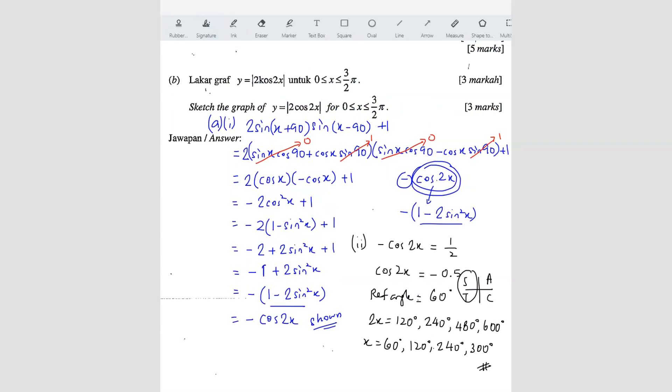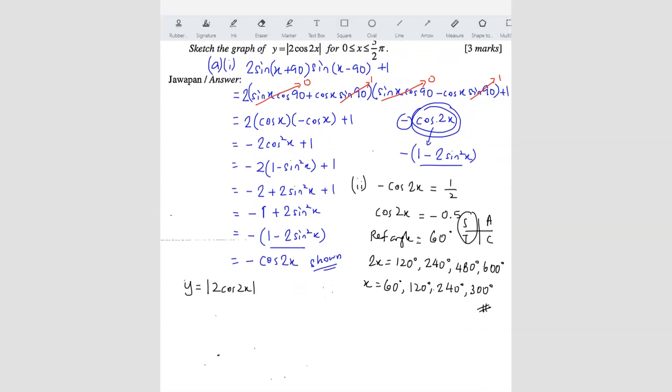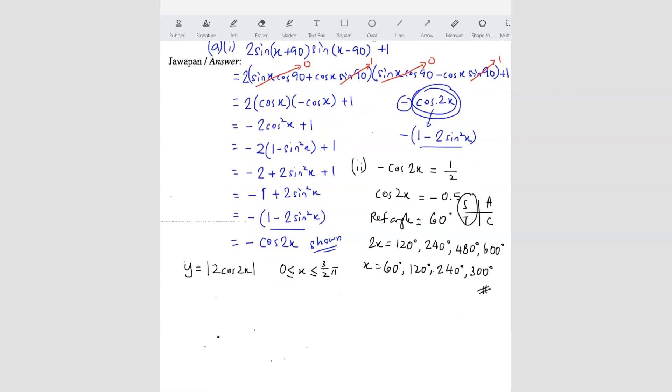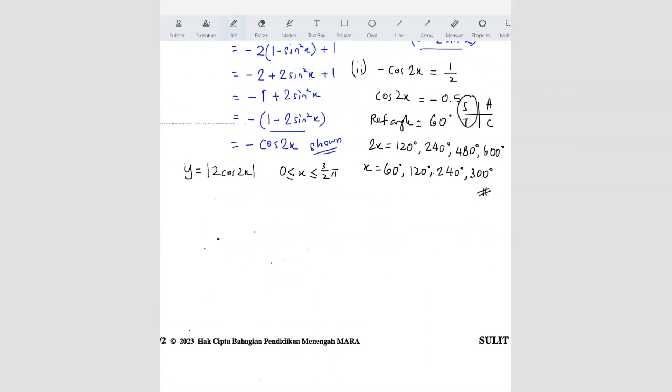Sketch the graph. So they want you to sketch the graph y equals to |2cos(2x)|. Oh, wait. One more thing. They give you the range. See the range they give you is 0 ≤ x ≤ 3π/2. So they now give you 2π. So it's not exactly the whole thing you have to draw. Because this is only until 3π/2.